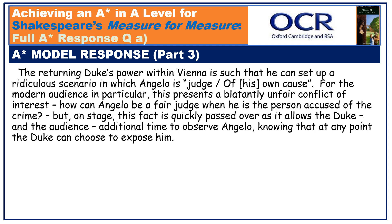The returning Duke's power within Vienna is such that he can set up a ridiculous scenario in which Angelo is judge of his own cause. For the modern audience in particular, this presents a blatantly unfair conflict of interest. How can Angelo be a fair judge when he is the person accused of the crime? But on stage, this fact is quickly passed over, as it allows the Duke and the audience additional time to observe Angelo, knowing that at any point the Duke can choose to expose him.